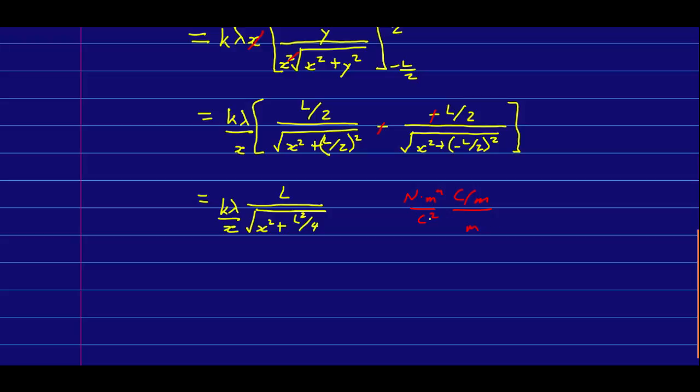And so, we have Coulombs takes out Coulombs, meters takes out a meter, and a meter takes out a meter, and we get, as we ought to, Newtons per Coulomb, which is correct for an E field.